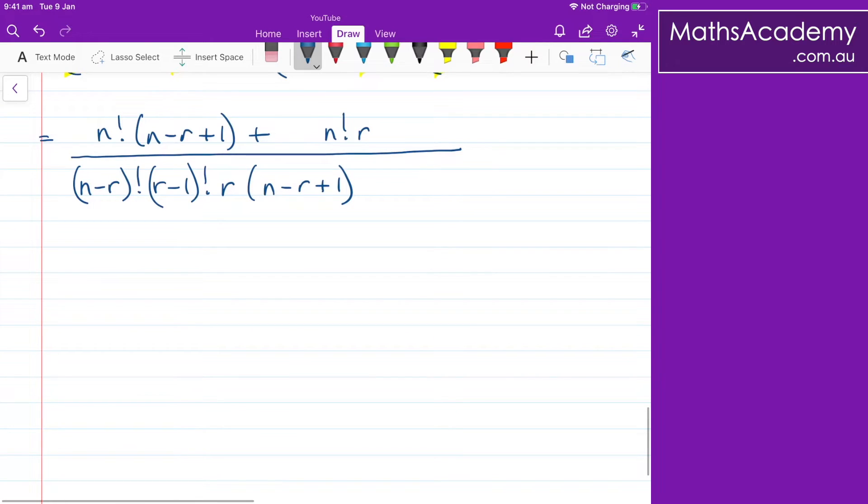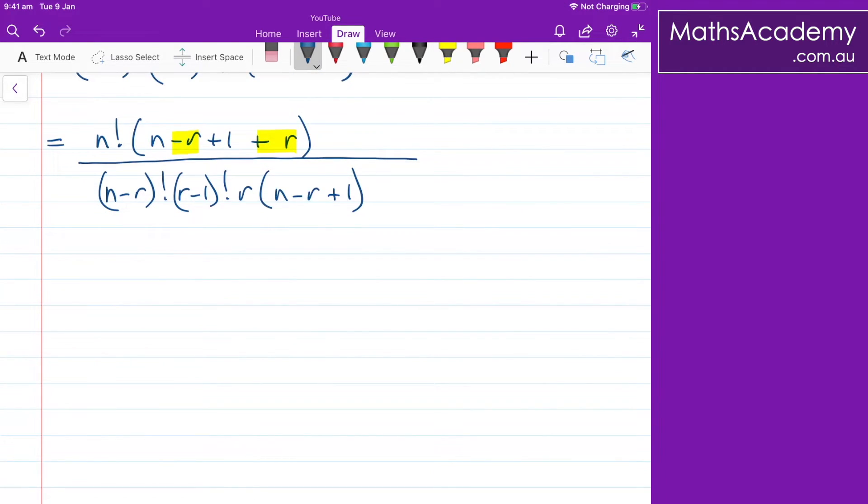Now, looking at this numerator, I can see I've got a common factor here of n factorial. So let me factorize that up. We've got the n factorial, in brackets we'll have the n minus r plus one plus that r. In the denominator, nothing changes here. So let's start to simplify things in this numerator. I've got this minus r plus r here, so they're just going to cancel. And what I'll be left with in the numerator is n factorial multiplied by n plus one.